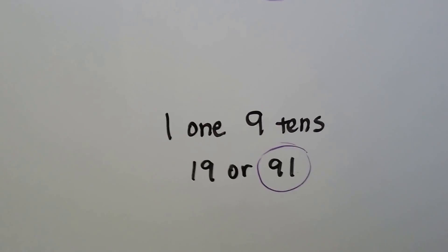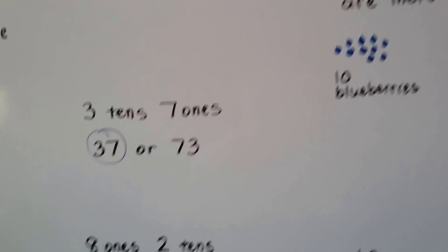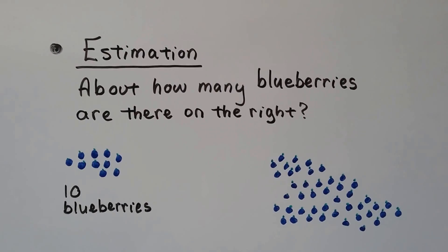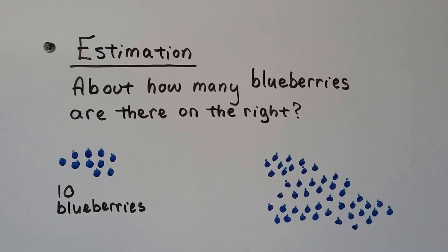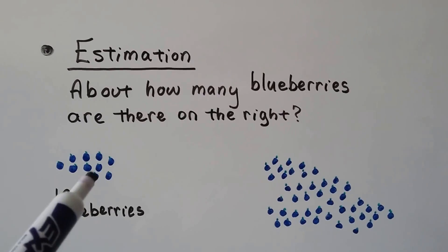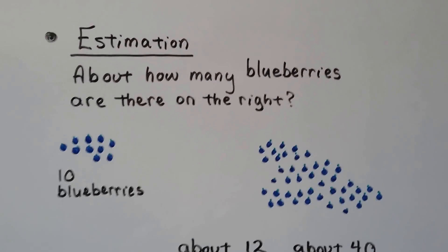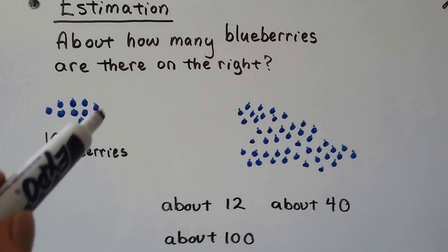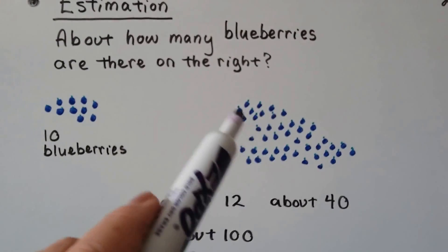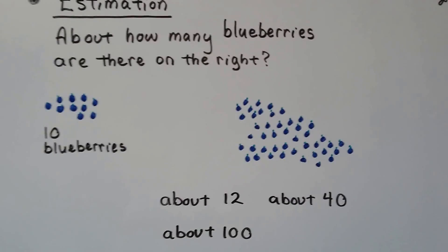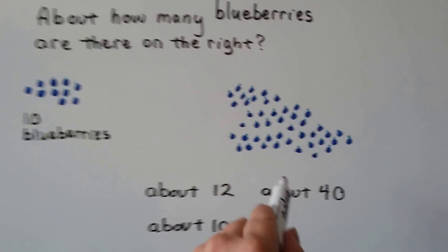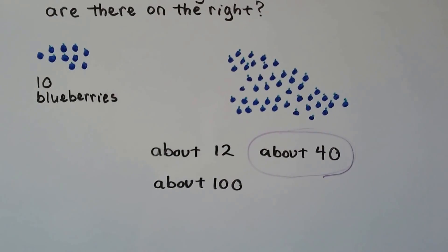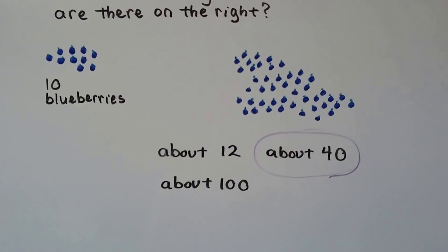Now, do you remember we talked about estimation? It's about making a smart guess about how many there are. About how many blueberries are on this right side? If this group is about 10 blueberries, about how many do you think are here — about 12, about 40, or about a hundred? We could count: 10, 20, 30, 40 — there's about 40. If you said about 40, you're correct. 100 is too many and 12 is too little; 12 would just be two more than that one. So there are about 40 blueberries.